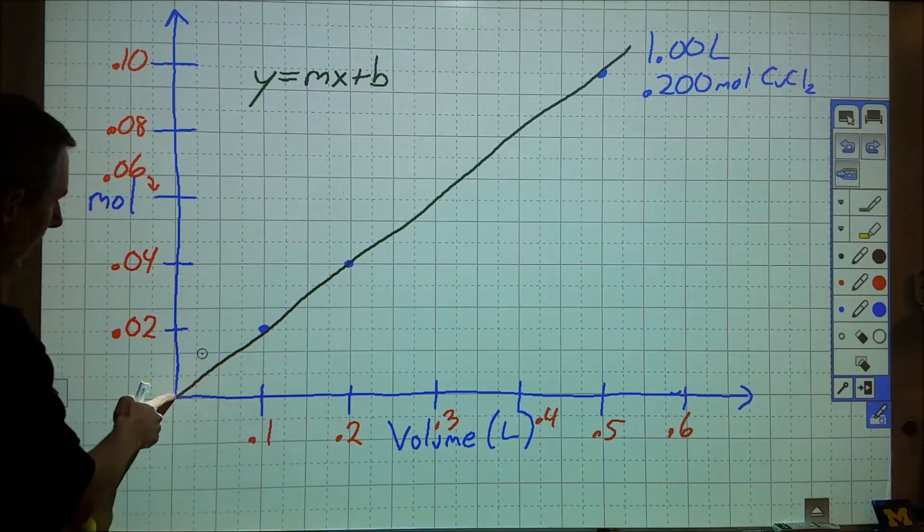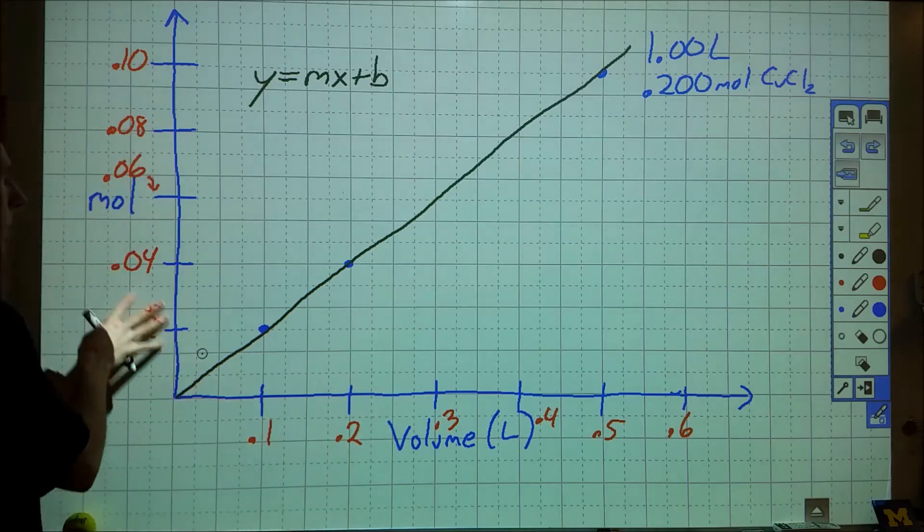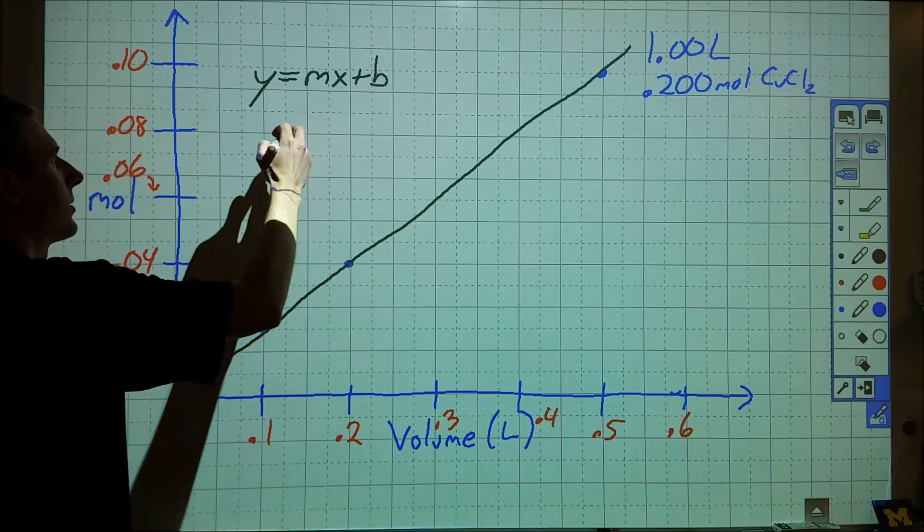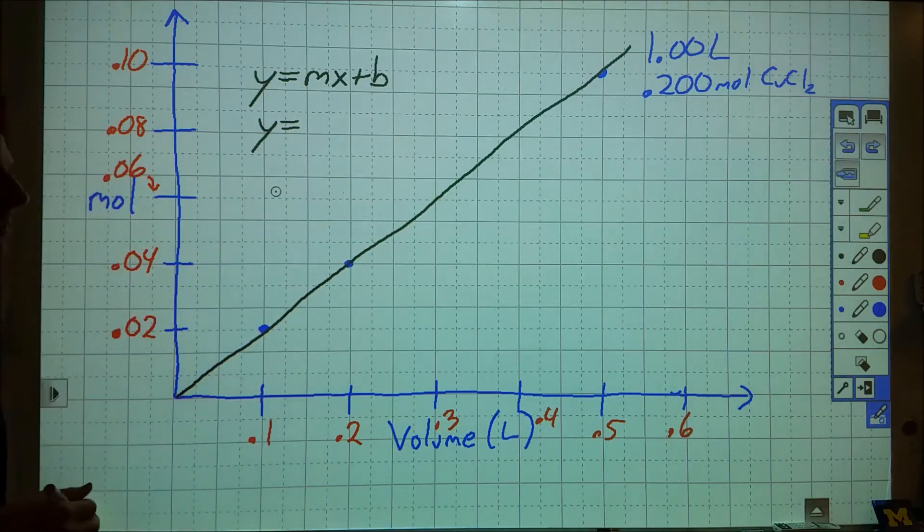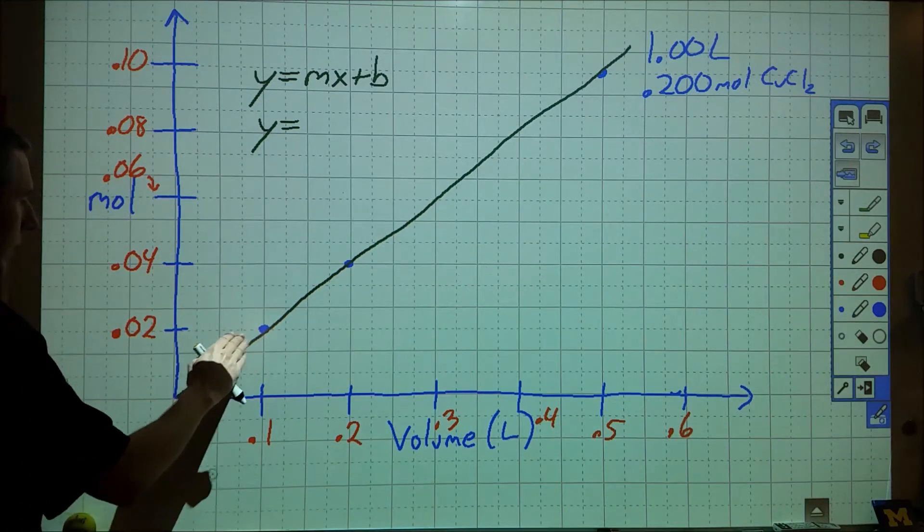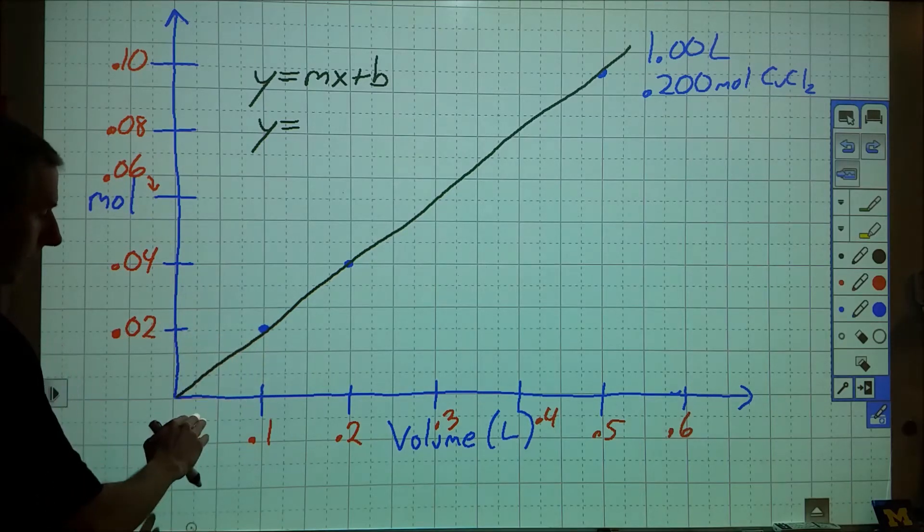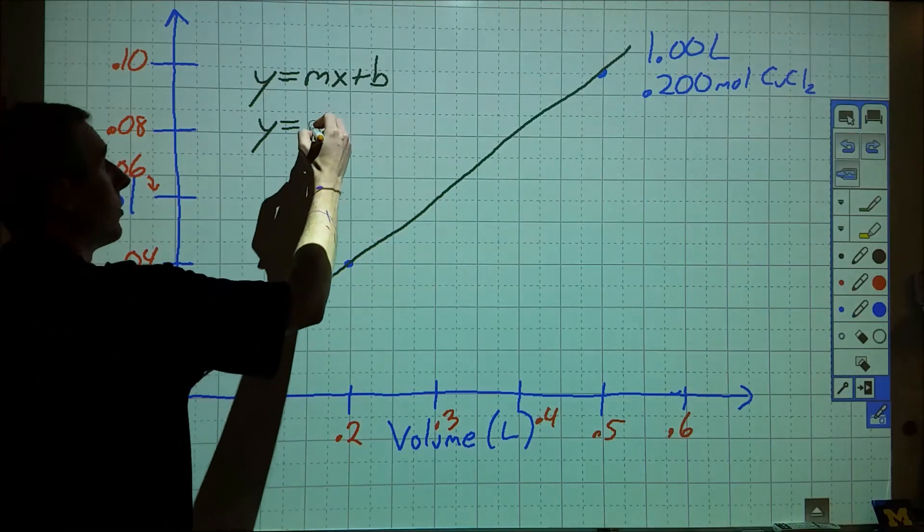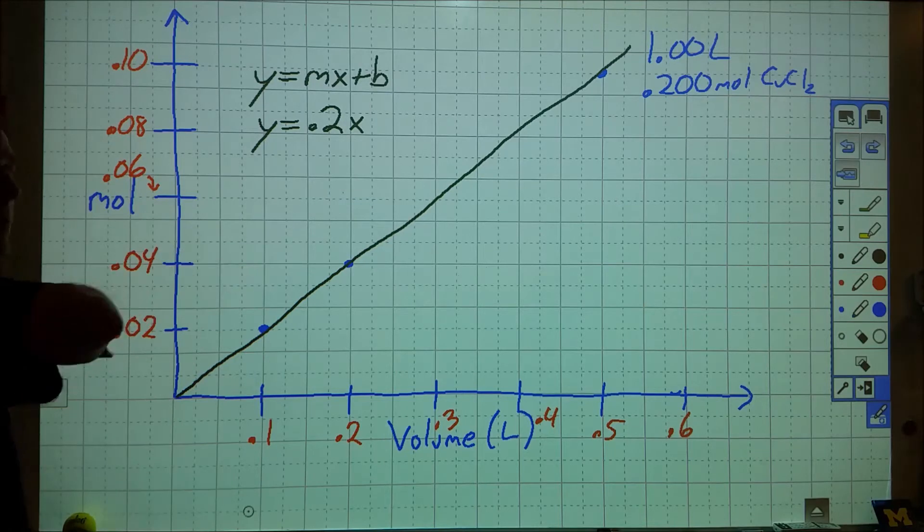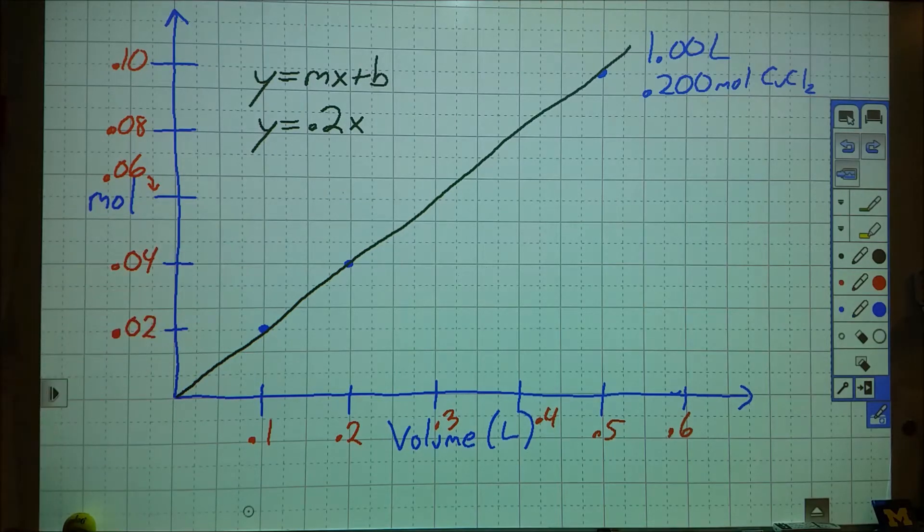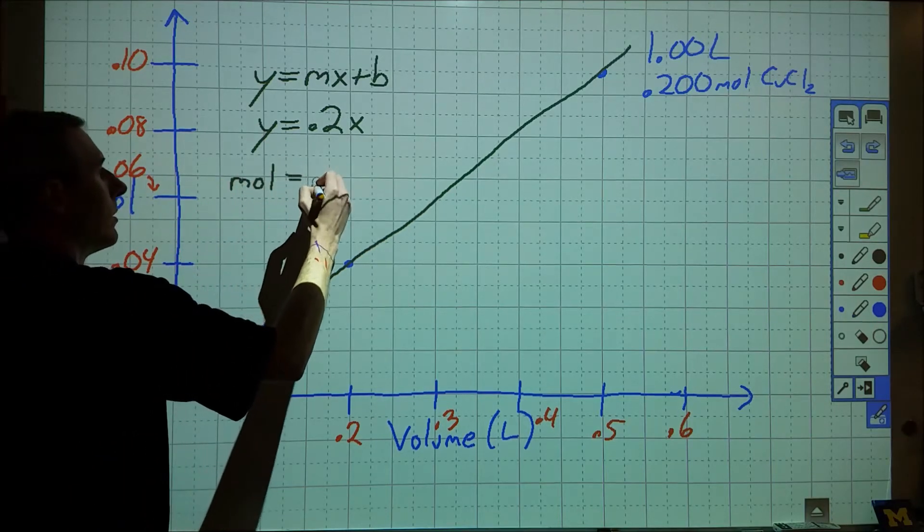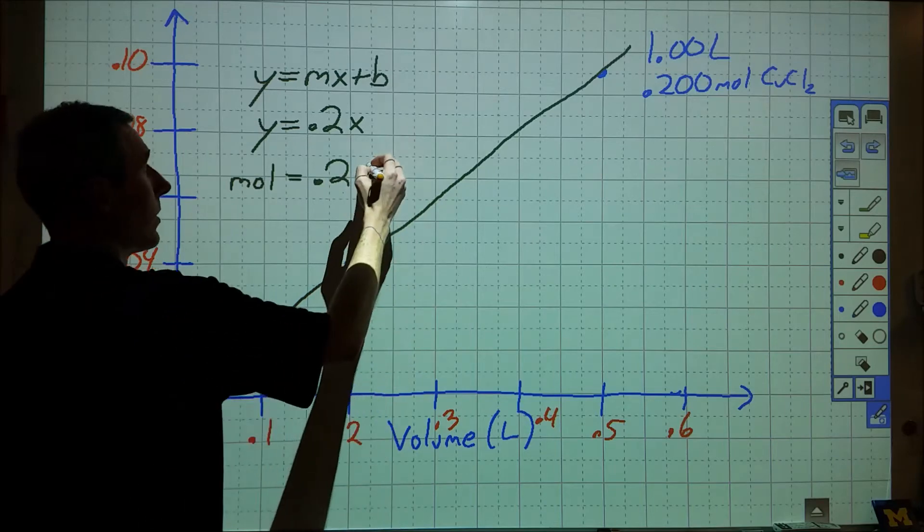We can put in a y equals mx plus b equation. Now, it looks like that graph goes to the origin, and if we think about it, if we had 0 solution, how many moles would we have? 0 seems like a reasonable thing for that. So we're going to drop b from this, and we're going to replace it with y equals mx. What I want to do is look at what the slope is. So if I look at the slope, I'm going from 0,0, I'm going up by 0.02 and over by 0.1. So if I take this and divide it by this, I end up with a slope of 0.2 times x. So the equation for this line of best fit here is y equals 0.2x. And if I look at plugging in what my y value is, my y value is moles, my slope is 0.2, and my x is the volume in liters.